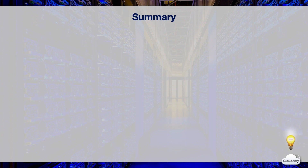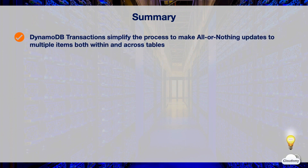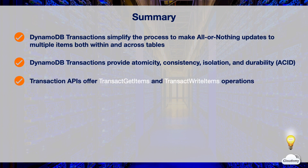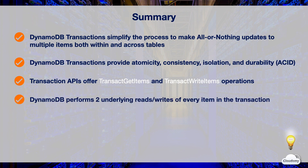In this episode we've learned about DynamoDB transactions. DynamoDB transactions simplify the process to make all-or-nothing updates to multiple items within one table or across multiple tables, providing an ACID model. Each transaction performs two underlying reads or writes for each item — for best performance, provision enough capacity for extra operations by enabling auto scaling or on-demand capacity.